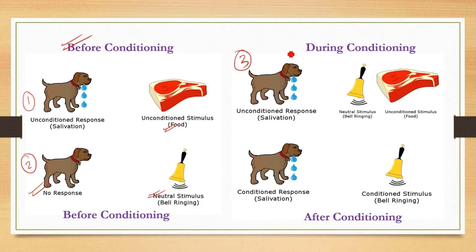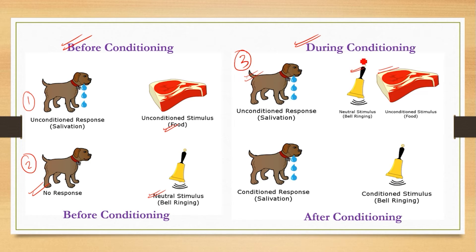Step three is during conditioning. Here we have food and the dog, and when we give food to the dog, we also ring a bell at the same time. When the bell rings, the dog notices the food and salivates — it wants to eat. This is the conditioning process. We are creating a relationship between a stimulus and a response. The stimulus is the bell ringing, which is being associated with the unconditioned stimulus, which is food.